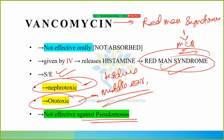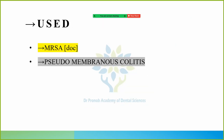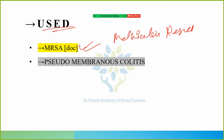Vancomycin is not effective against Pseudomonas. Vancomycin is only active against gram positive bacteria. Pseudomonas is gram negative, so vancomycin is not effective against it. The main use of vancomycin is for MRSA — Methicillin-Resistant Staphylococcus aureus. It is also used in pseudomembranous colitis.